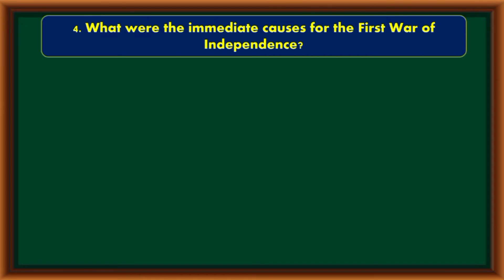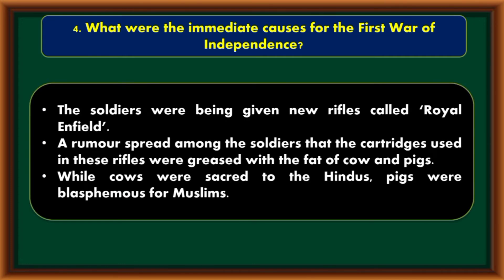What were the immediate causes for the First War of Independence? The soldiers were being given new rifles called Royal Enfield. A rumour spread among the soldiers that the cartridges used in these rifles were greased with the fat of cow and pigs. While cows were sacred to the Hindus, pigs were blasphemous for Muslims.